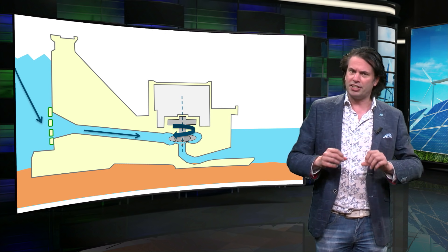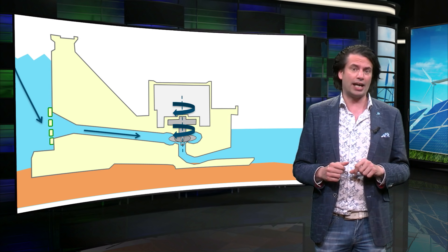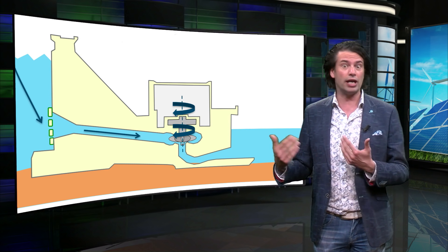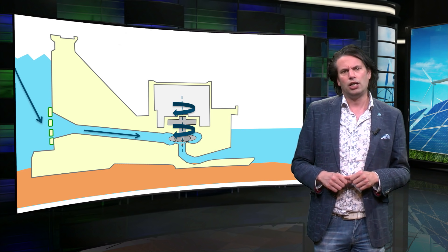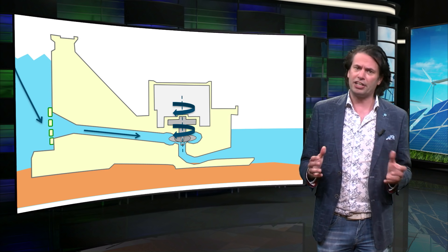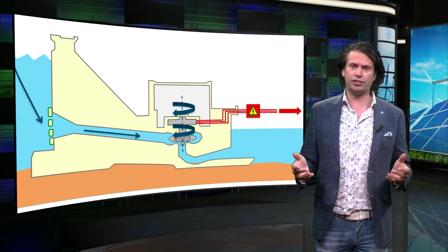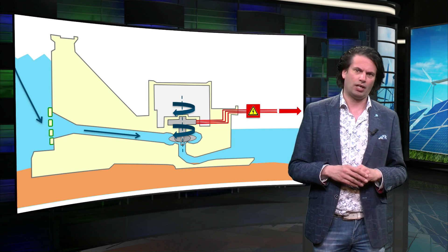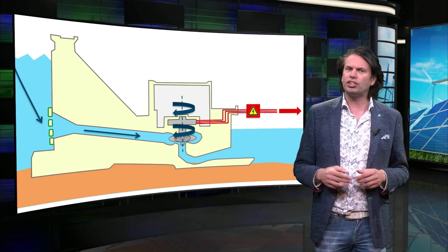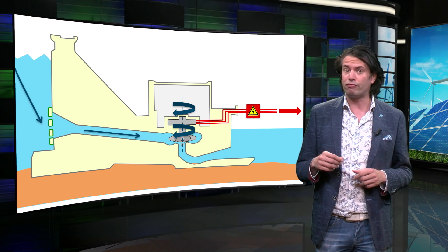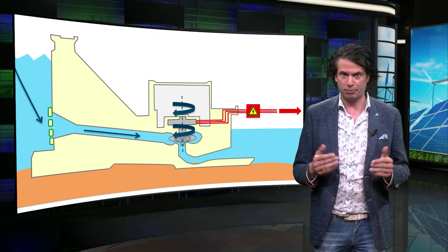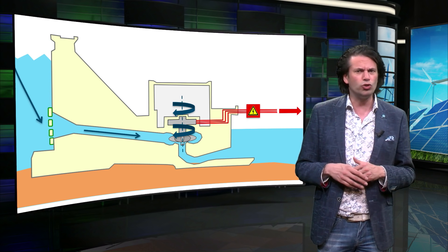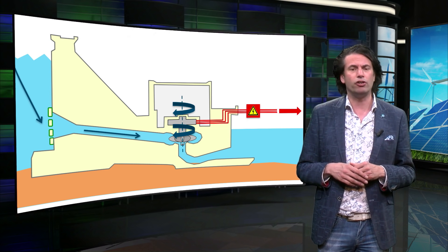The turbine is connected to a huge electric generator to convert the mechanical energy into electrical energy. The generator is connected via transformers to the electricity grid to deliver electricity into the grid. Losses in the system are mainly caused by friction at the edges of the pipe. The turbine and electrical losses also further reduce the efficiency of the dam.